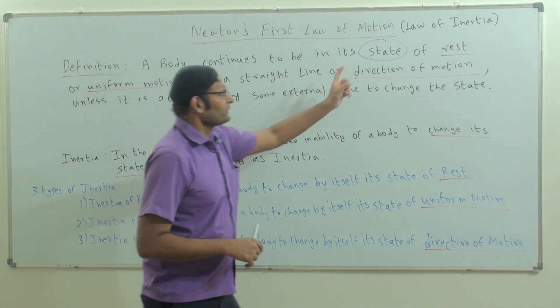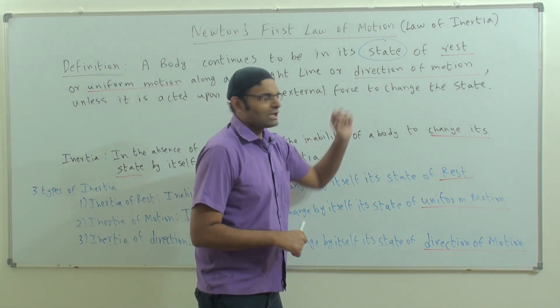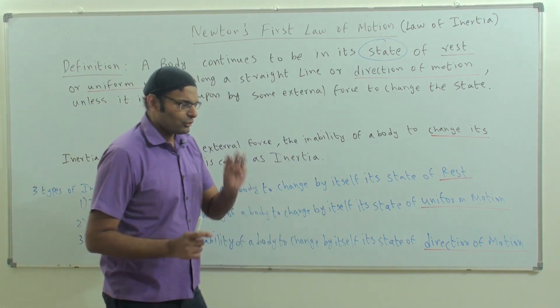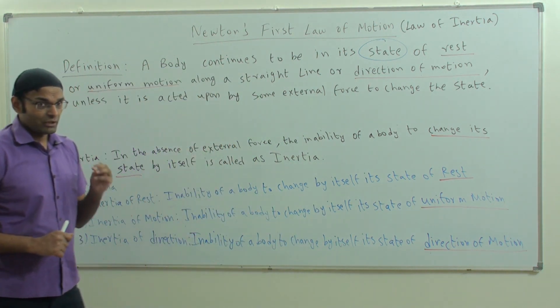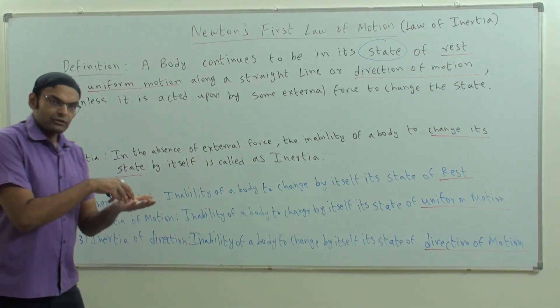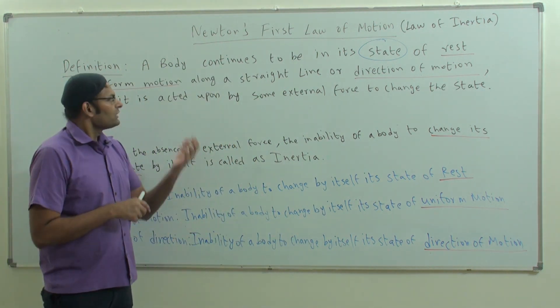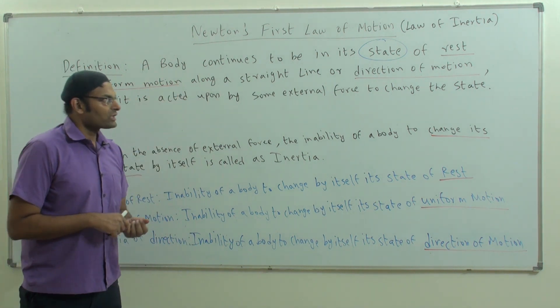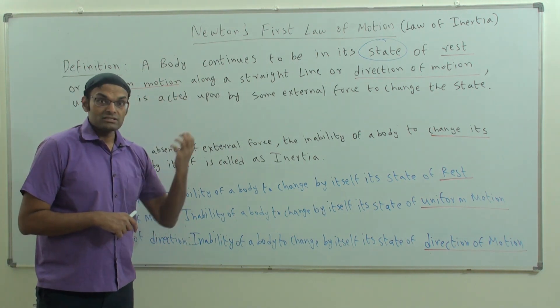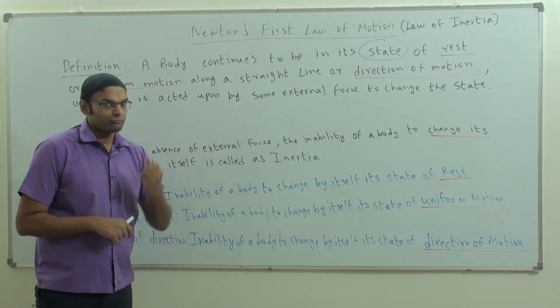You need to know that I have circled the word 'state.' There are three states being discussed: state of rest, state of uniform motion along a straight line, and state of direction of motion.